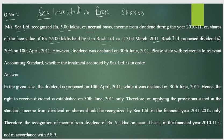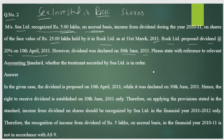At 31st March 2011, Rock Limited proposed a dividend of 20 percent. On 10th April 2011, however, the dividend was declared on 30th June 2011. You are asked to state, with reference to the relevant accounting standard, whether the treatment adopted by C Limited is in order or not.